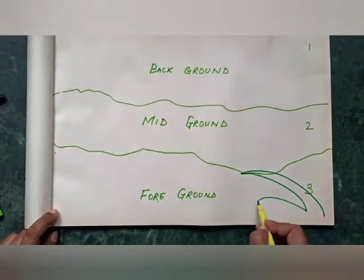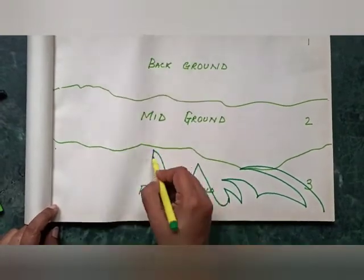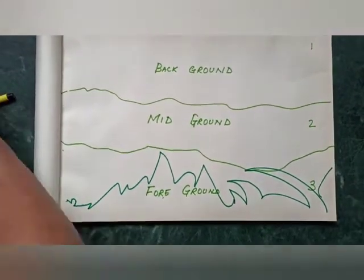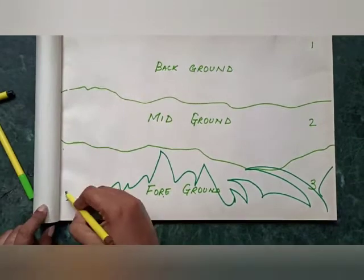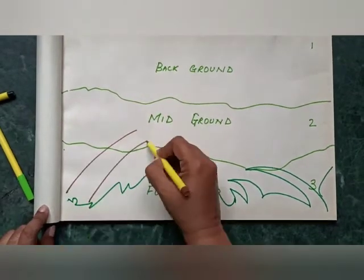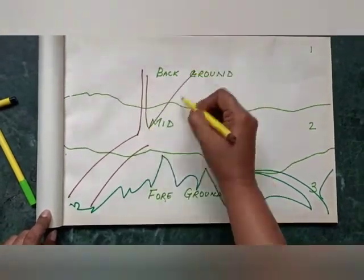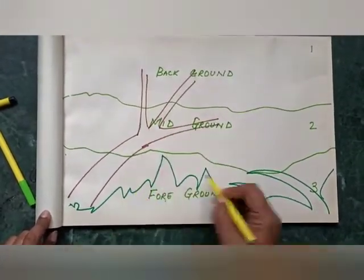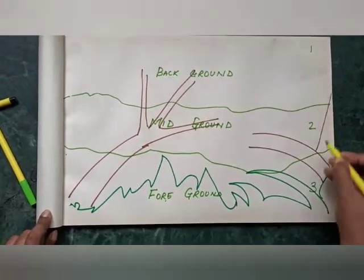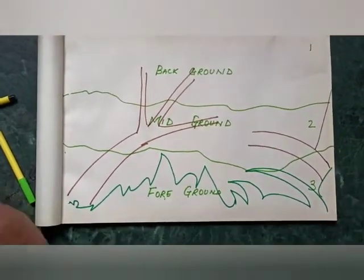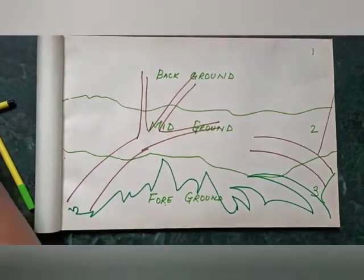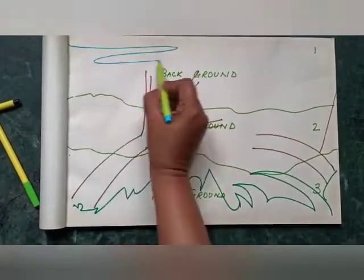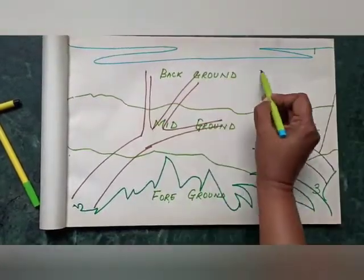Now I am adding trees, grass, leaves to it to make it look a place. In this, you can add your deer, your beetle, your ant and your birds in the picture.